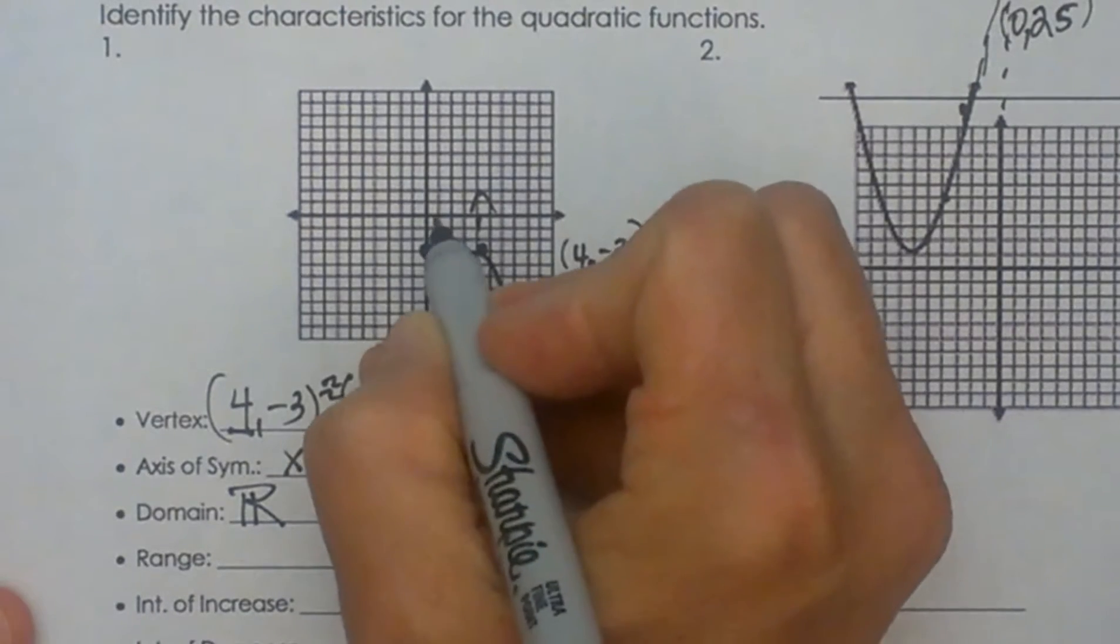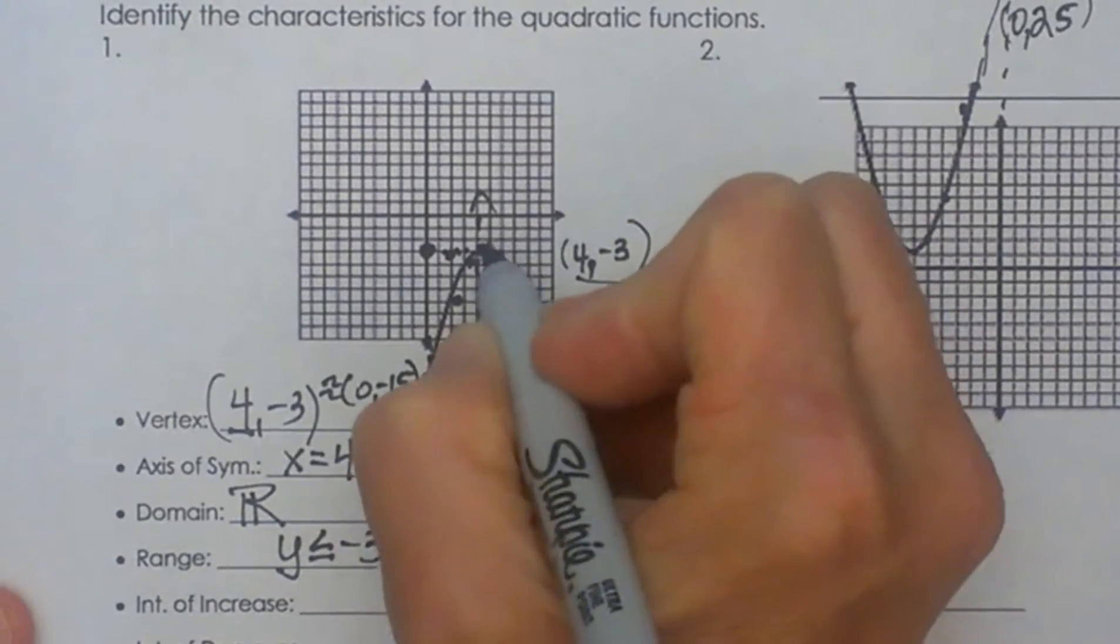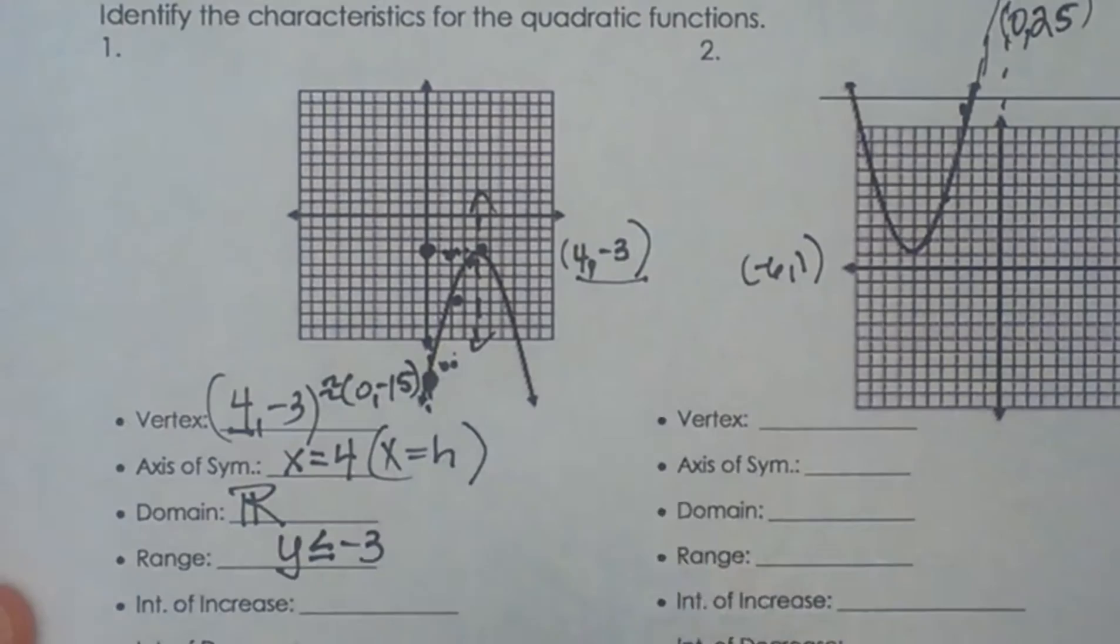On the y axis we are starting here and we are going down forever. So what value is that? That is negative 3. So it is all the y's that are less than or equal to negative 3 because negative 3 is an output so we will include negative 3.